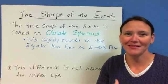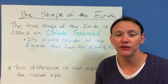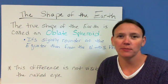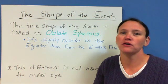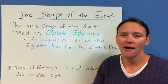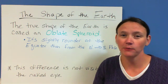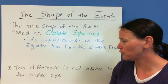Now this difference is not visible to the naked eye. If you think about a picture that you've seen of the Earth from space, it looks like it's a perfect circle. But when we actually measure it, there is a slight difference around the equator than from the North Pole to the South Pole. So that's why we call it the oblate spheroid.